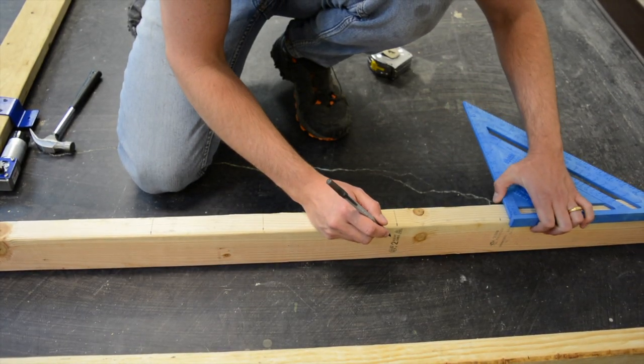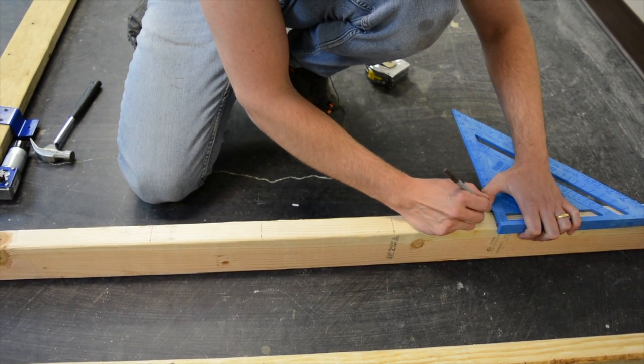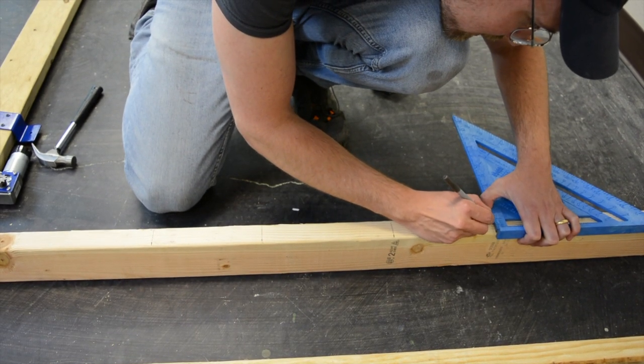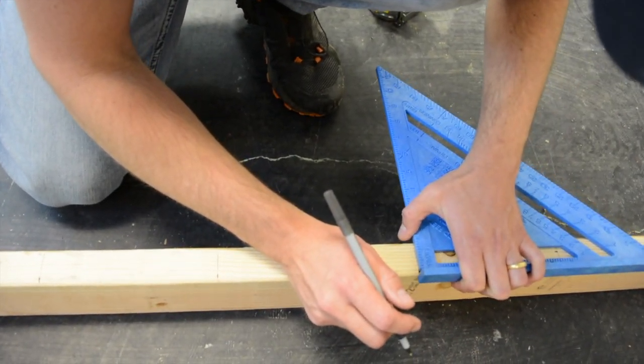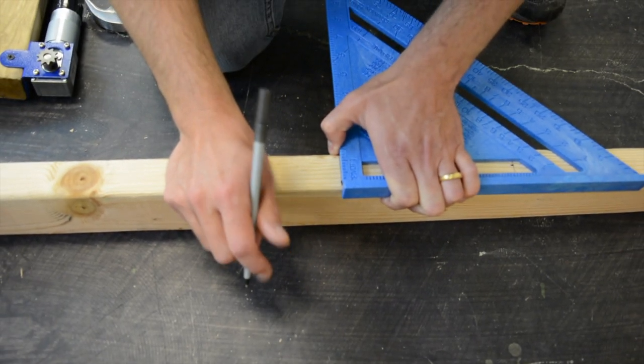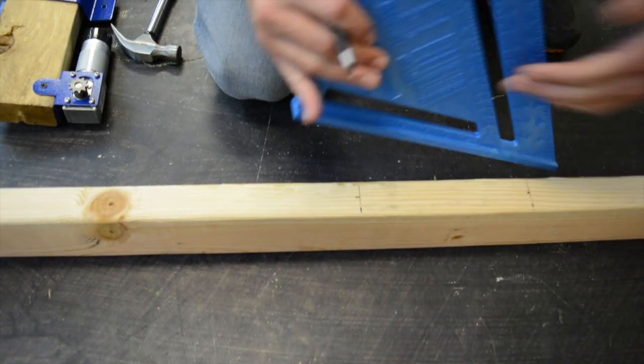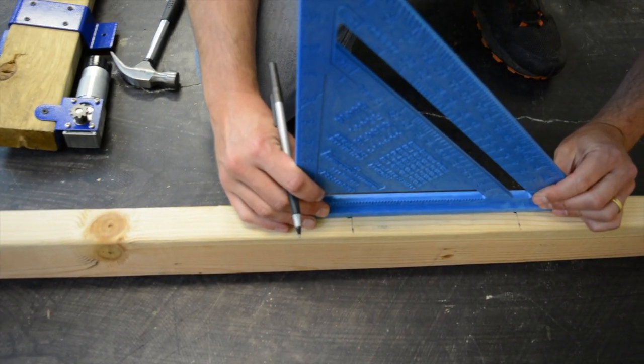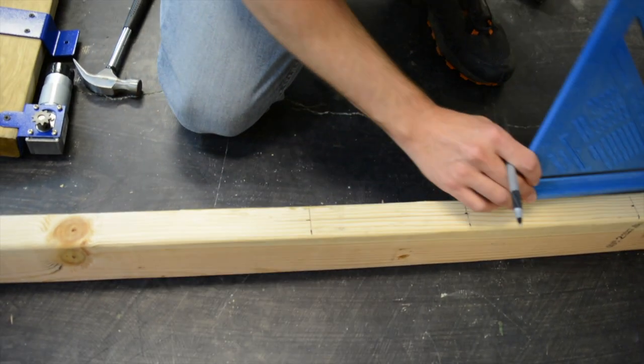For this next part, we need to find the exact center of a vertical frame leg. Measuring from the edge on the short side, measure all the way across and then divide that by two to find the middle. Draw that center mark on each one of our lines that we made with the speed square. Then we're going to align our speed square with those marks and draw a straight line between them.